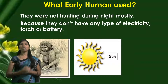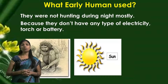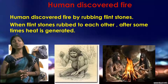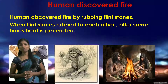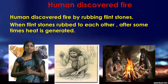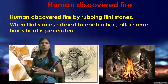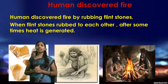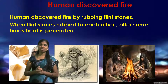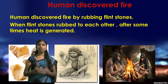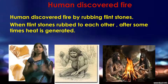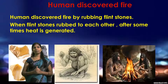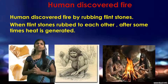So my dear students, we are going to learn what early humans used. Early humans discovered fire by rubbing flint stones. Here I have shown you some examples of flint stones. People were rubbing flint stones against each other to make fire. When flint stones are rubbed together, after some time heat is generated, and that is how humans discovered fire.